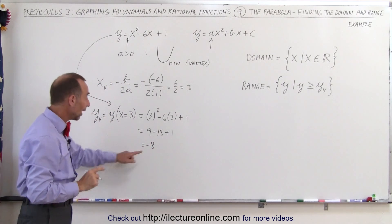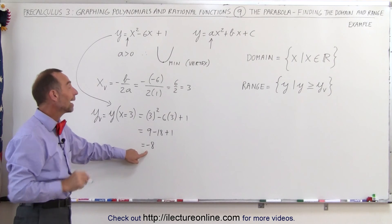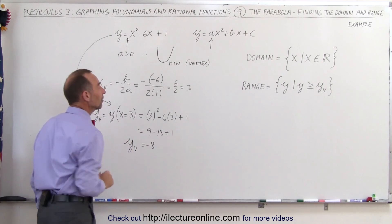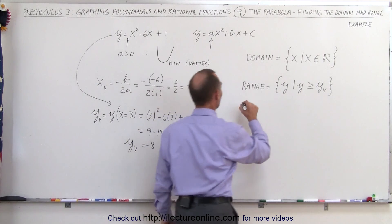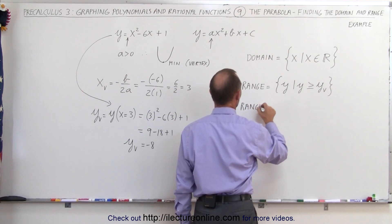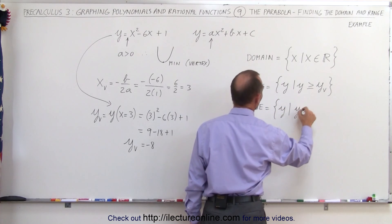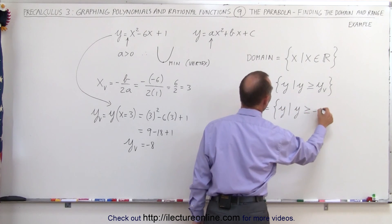The y-coordinate of the vertex is -8. Therefore, the range is all values for y such that y ≥ -8. That's how we find the range and domain for a parabola.